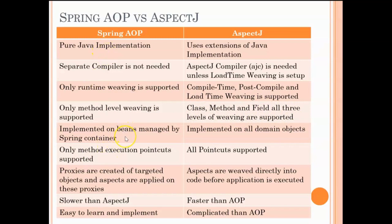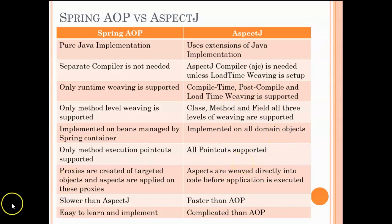Spring AOP can be implemented only on beans managed by the Spring container, whereas for AspectJ any POJO — any normal Java class — can be used to implement AspectJ annotations, so it does not have to be a Spring container-managed bean. Also, in Spring AOP only method execution pointcuts are supported. If you remember from our previous video, we had spoken about executions and expressions in pointcuts — that is what is meant here. Whereas in AspectJ, all sorts of pointcuts are supported, and in a future video we will talk about the various pointcuts supported by AspectJ.